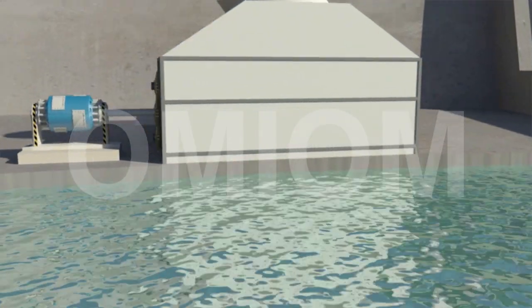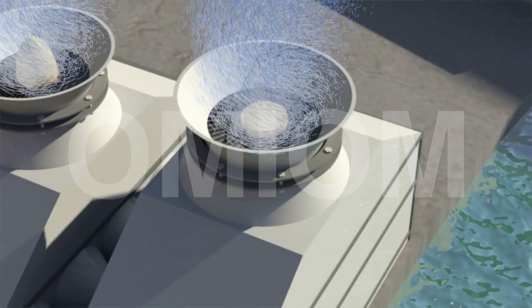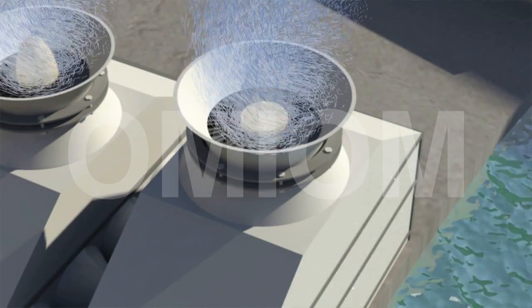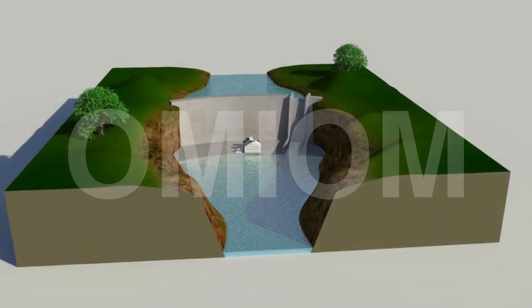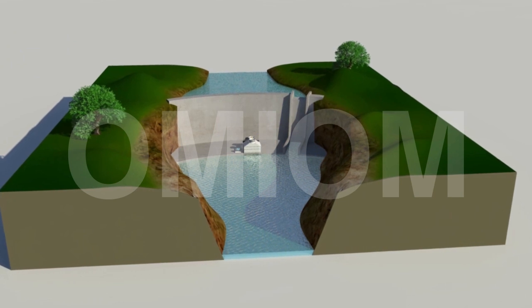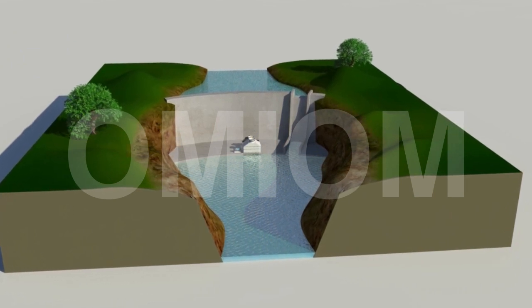Finally, water leaves the system and flows downstream, and air returns back to the atmosphere. Water leaving the Hydroair assembly is rich with oxygen and free of coliform bacteria.